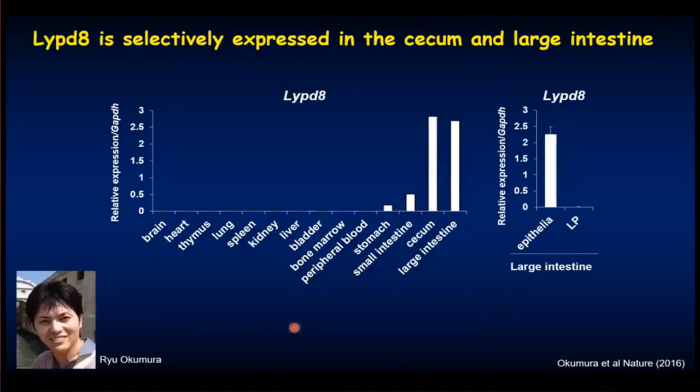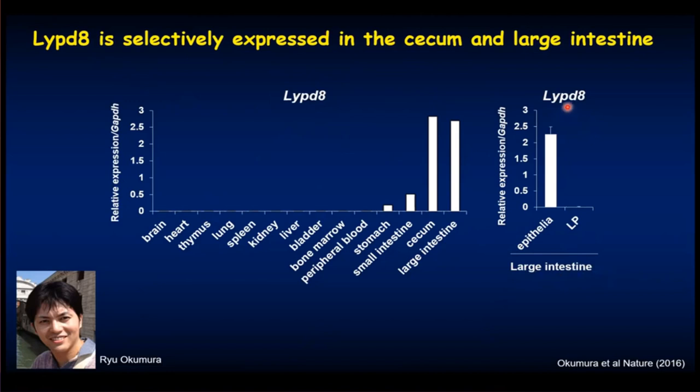My PhD student addressed these issues by focusing on molecules selectively expressed in large intestinal epithelial cells. He found LYPD-8. When we analyzed mRNA expression of LYPD-8 in several tissues, LYPD-8 is expressed only in the gastrointestinal tract, particularly in the cecum and large intestine. LYPD-8 mRNA is expressed in the epithelial cells, but not in the lamina propria cells.